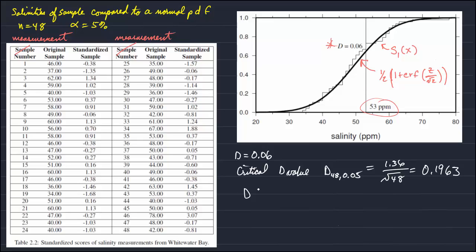Our D value of 0.06 happens to be less than 0.1963. So the cumulative probability distribution of the salinities measured does not deviate significantly enough from the cumulative probability distribution for a normal distribution. We cannot reject our null hypothesis that the two both have normal distributions — D is simply not big enough to reject the null hypothesis.